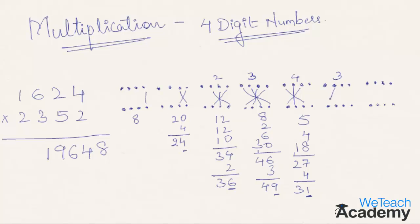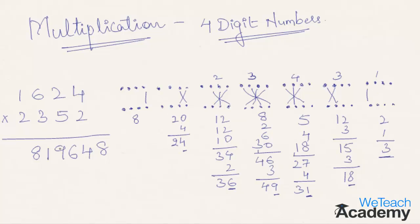Next, multiply 6 into 2 is 12, plus 3 into 1 is 3; 12 plus 3 gives 15, plus the 3 carried forward gives 18. Write 8 in the final answer and carry 1. In the final step, 2 into 1 is 2, plus the 1 carried forward gives 3. Write 3 in the final answer.